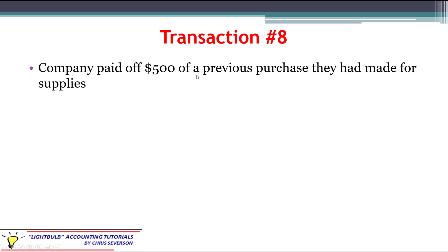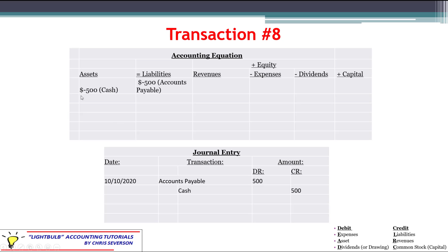Transaction number eight: the company paid off $500 of a previous purchase made for supplies — we'll assume it's accounts payable. They're paying $500 in cash and no longer owe as much. There's a decrease to the cash asset and a decrease to the accounts payable liability, so we're still in balance. To decrease cash, we use the opposite of its debit balance and credit it $500. Accounts payable has a normal credit balance, so to decrease it, we debit accounts payable for $500.